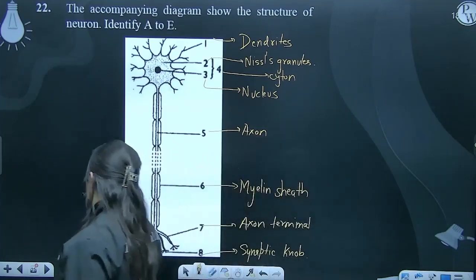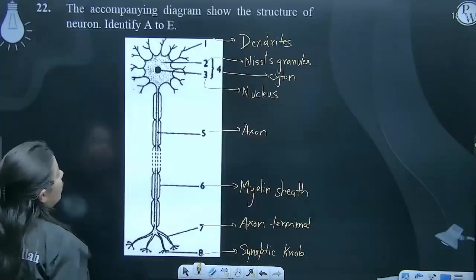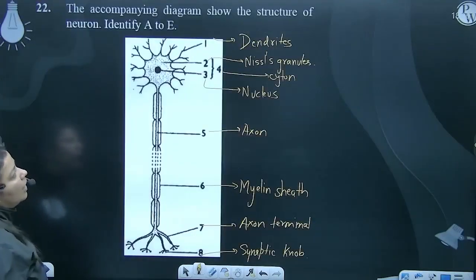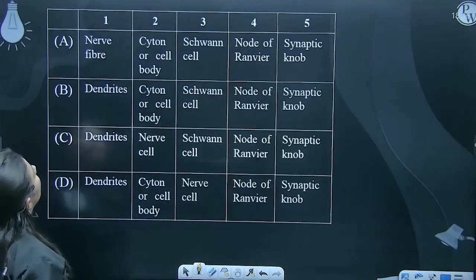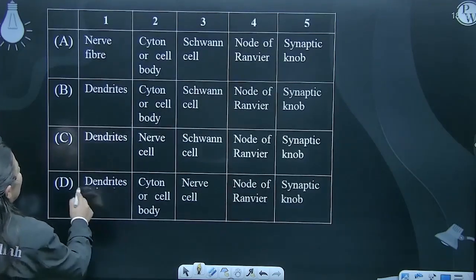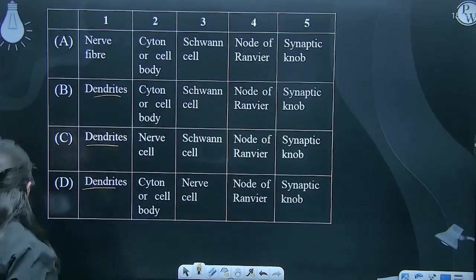Let me remind you the options: 1 is dendrite, 2 is Nissl, 3 is nucleus. Okay, 1 is dendrite. Here, one: dendrite, dendrite, dendrite. Next option.